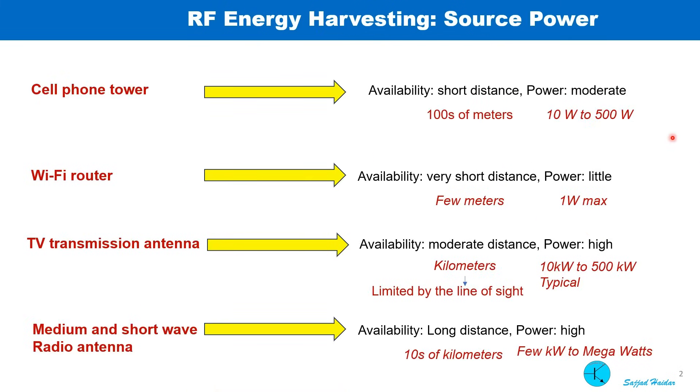Before answering that question, let us see how much power these sources are emitting and their respective ranges. For instance, cell phone towers, the range is hundreds of meters and the power is moderate, 10 watt to 500 watt.